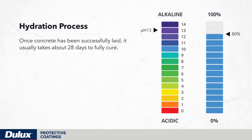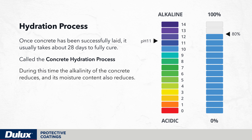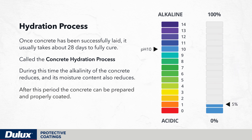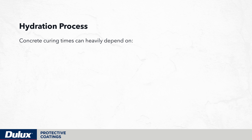Once concrete has been successfully laid it usually takes about 28 days to fully cure. This is called the concrete hydration process. During this time the alkalinity of the concrete reduces and its moisture content also reduces. After this period the concrete can be prepared and properly coated. Concrete curing times can heavily depend on ventilation, temperature and the overall concrete thickness.